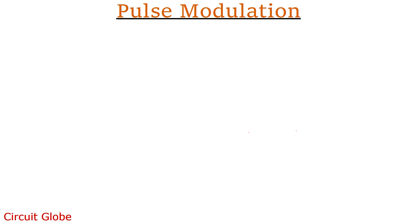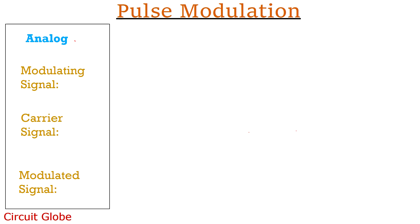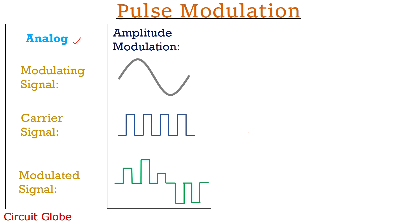Let's now proceed towards pulse modulation. The first type is analog pulse modulation, starting with pulse amplitude modulation (PAM). This is our analog modulating signal, this is our carrier signal in the form of pulses, and this is our finally modulated signal. Similar to continuous wave amplitude modulation, the amplitude of the carrier signal changes according to the amplitude of the modulating signal. As the amplitude of the modulating signal increases, the amplitude of the carrier signal also increases. With the decrease in the amplitude of the message signal, there will be a corresponding decrease in the amplitude of the carrier signal, and in this way the modulated signal is achieved.